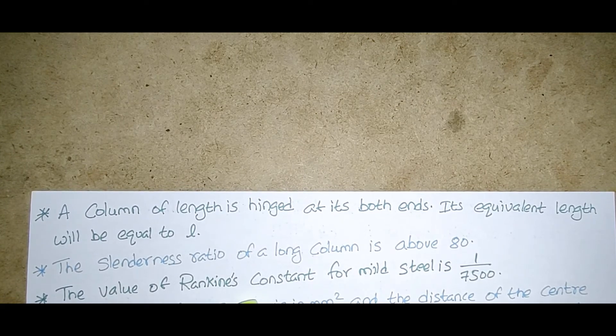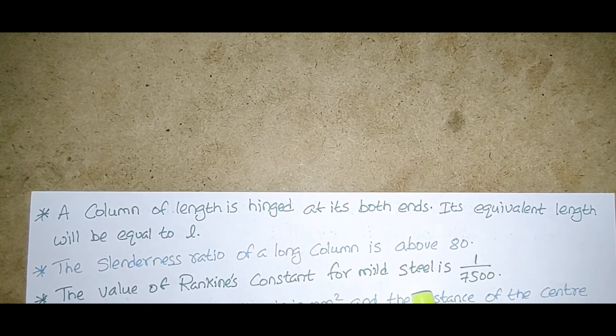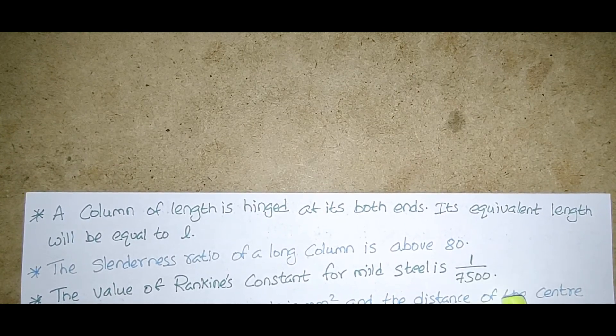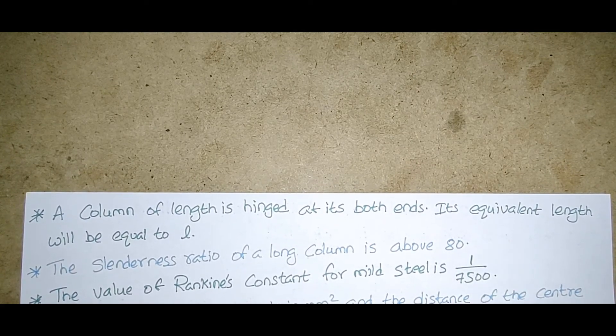The slenderness ratio of a long column is above 80. The value of Rankine's constant for mild steel is 1 by 7500.